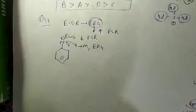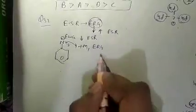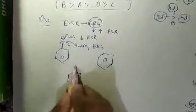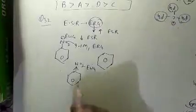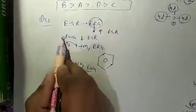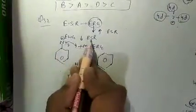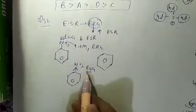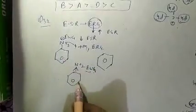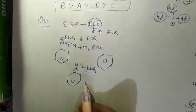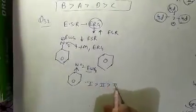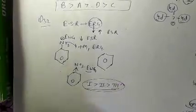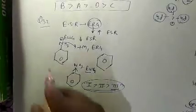Benzene has no substituent group, while NO2 is an electron withdrawing group that withdraws electron density from the ring, making electrophilic substitution difficult. NH2 increases electron density making EAS easier. So the order 1 > 2 > 3 is correct and question number 32 option B is correct.